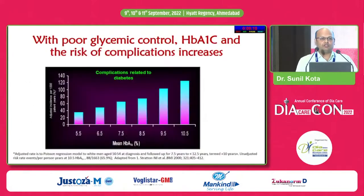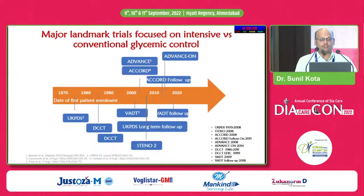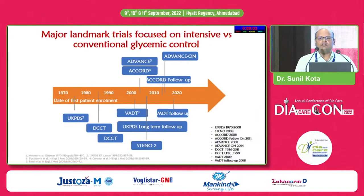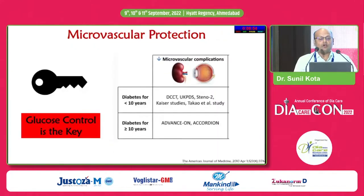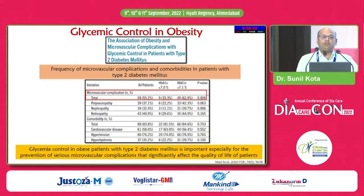What about the complications? Is glucose related to complications? Obviously yes. With increasing HbA1c we know there is a heightened chance of developing all diabetes-related complications. All the major landmark trials from the 1970s till now have focused on intensive versus conventional glycemic control. For microvascular complications, we have enough studies in patients with diabetes less than 10 years and more than or equal to 10 years.